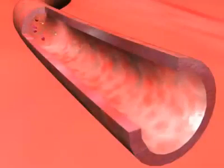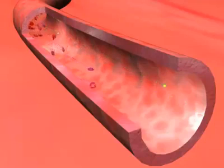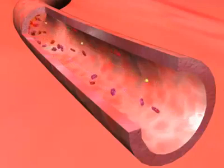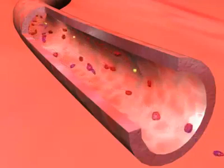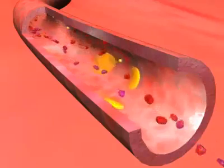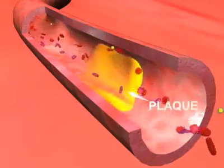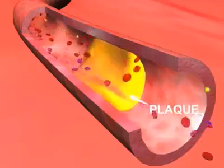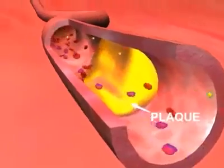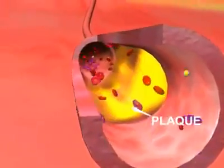These plaques are made of cholesterol and other substances floating through the bloodstream, such as inflammatory cells, proteins, and calcium. Many of the plaque deposits are hard on the outside and soft on the inside.